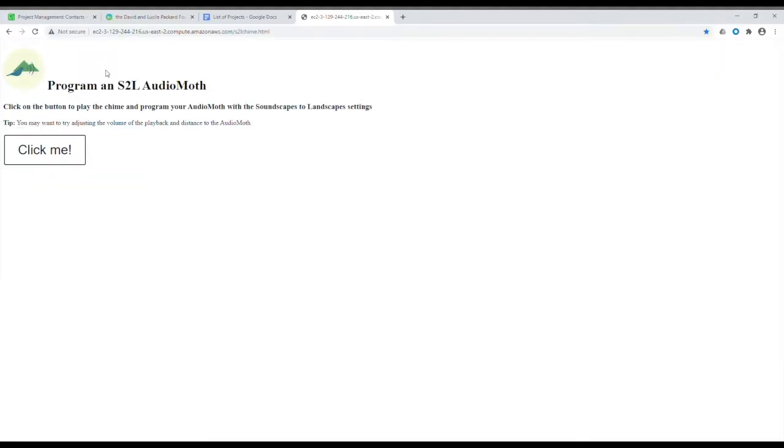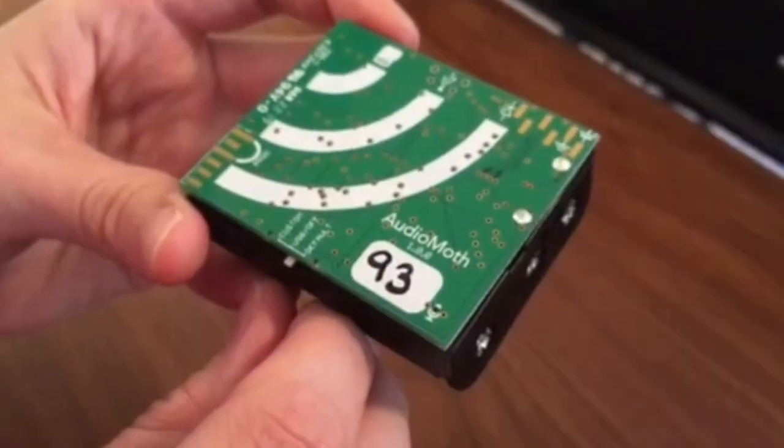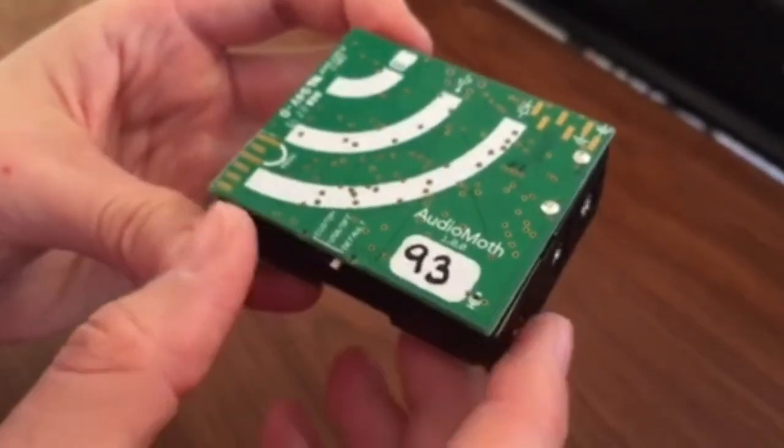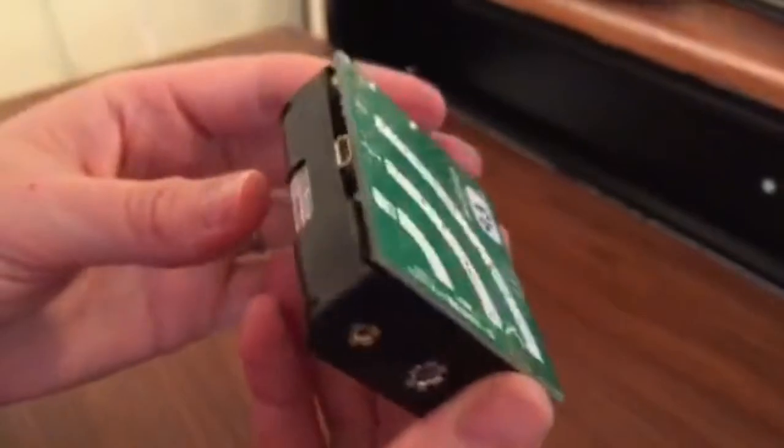Make sure that the volume on your device is turned on. Move the switch on the Audio Moth to default. The green LED will flash every two seconds while it waits for the chime to play.